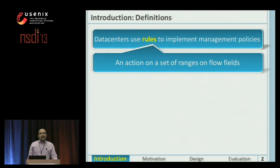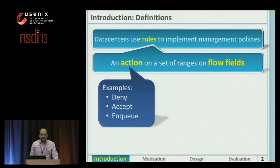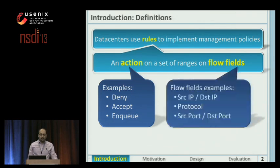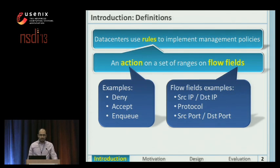A rule is an action on a set of ranges on flow fields. A few examples for the actions are to deny a packet, accept it to forward normally, or enquire it for coarse enforcement. Flow field examples are source and destination IP, protocol, or source and destination port.